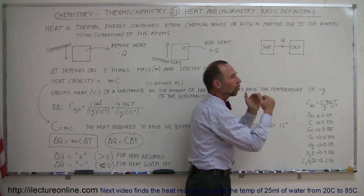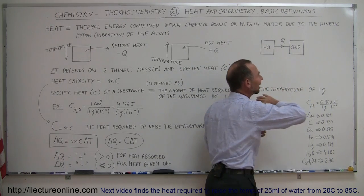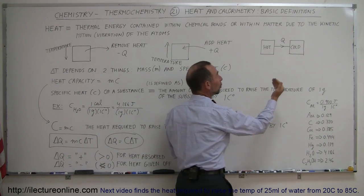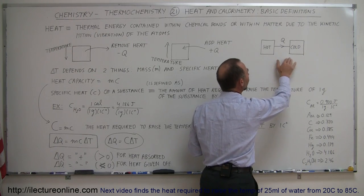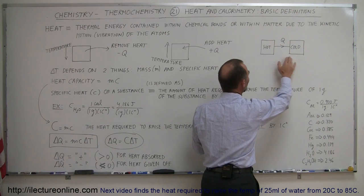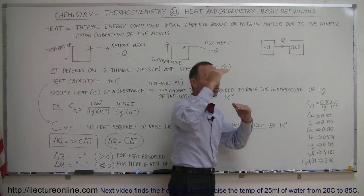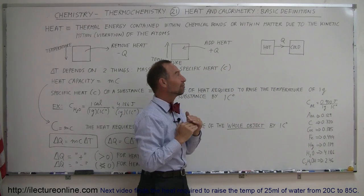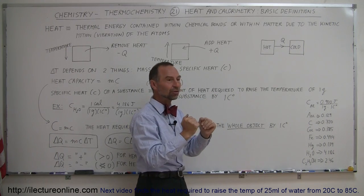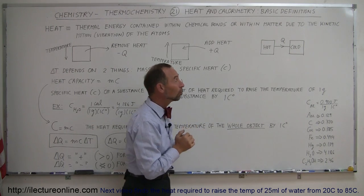If you bring them into thermal contact with one another, heat will flow from the hot object to the cold object — that is an absolute, it will always happen. The net heat flow will never be from cold to hot; it will always be from hot to cold. Eventually as more heat moves from the hot object to the cold object, the hot object becomes cooler, the cold object becomes warmer, and that continues until both objects are at the same temperature — which we call thermal equilibrium. Heat will then stop flowing between the two objects.